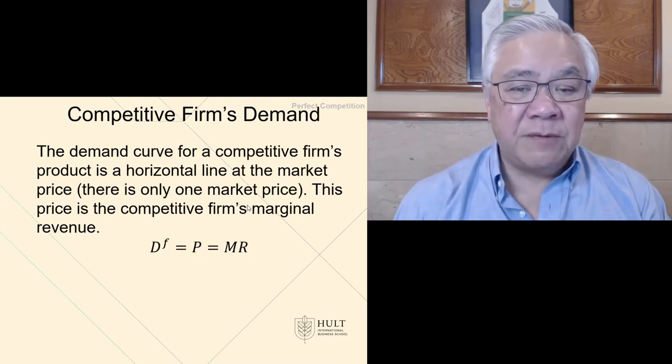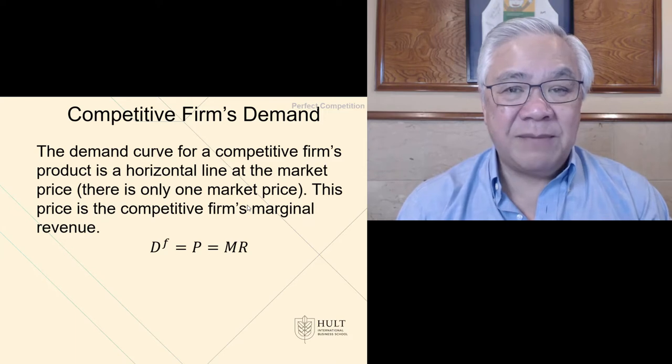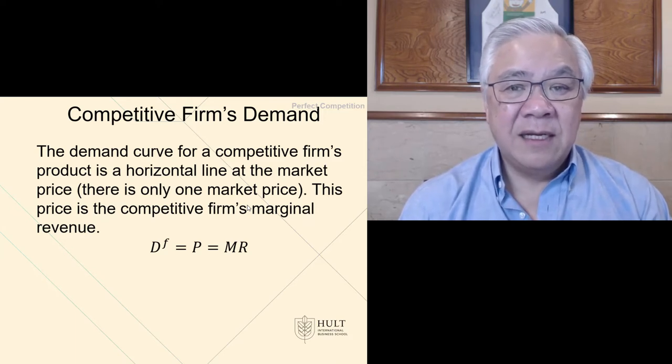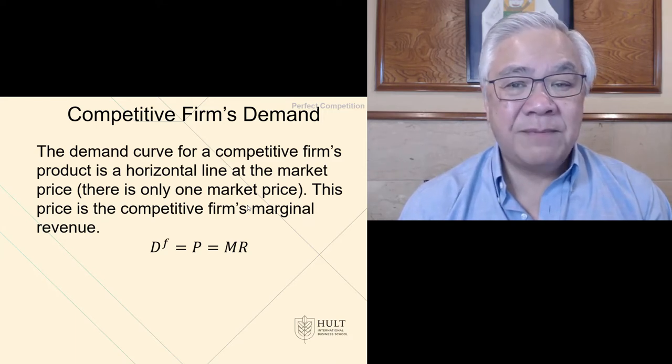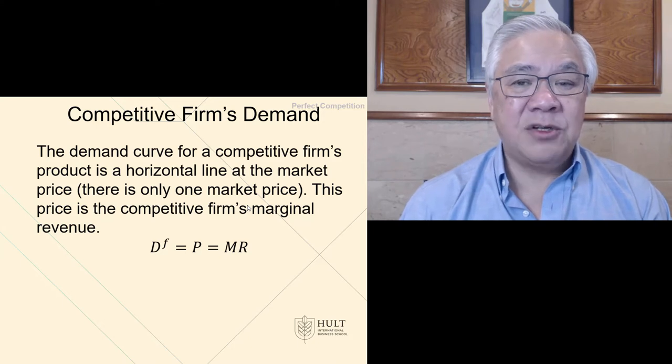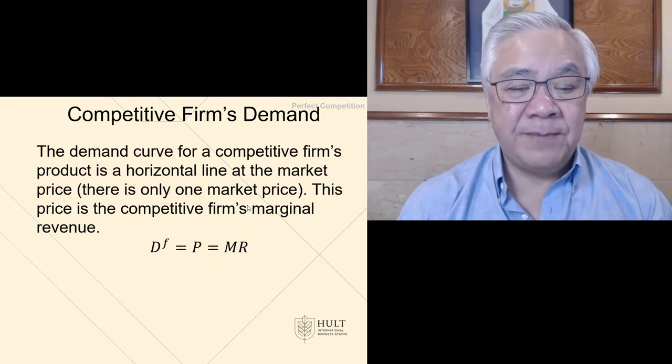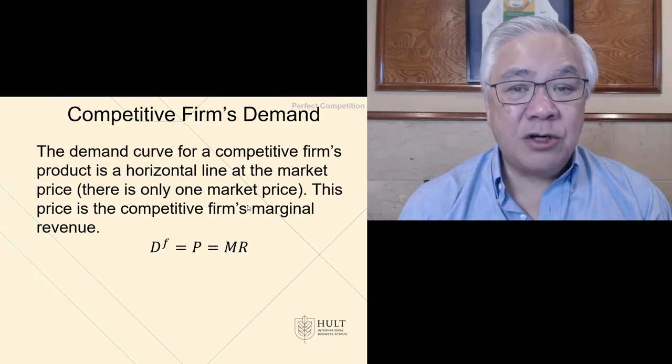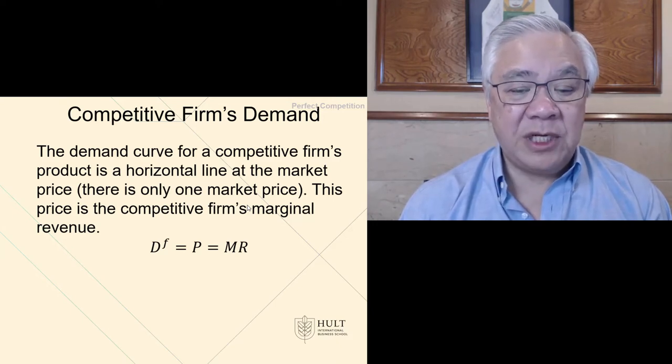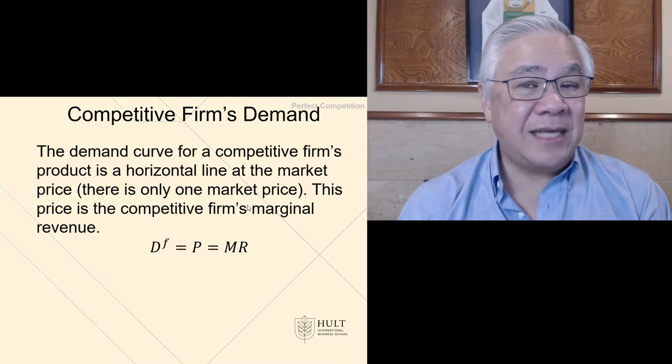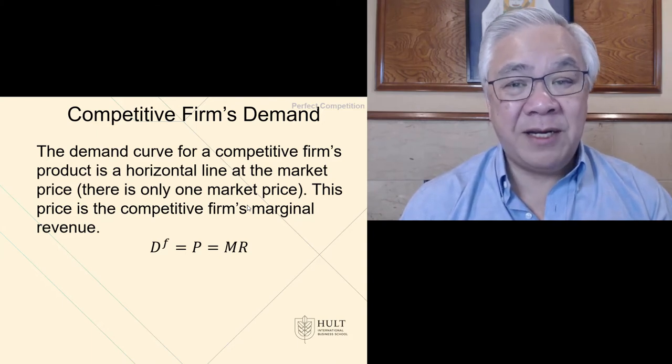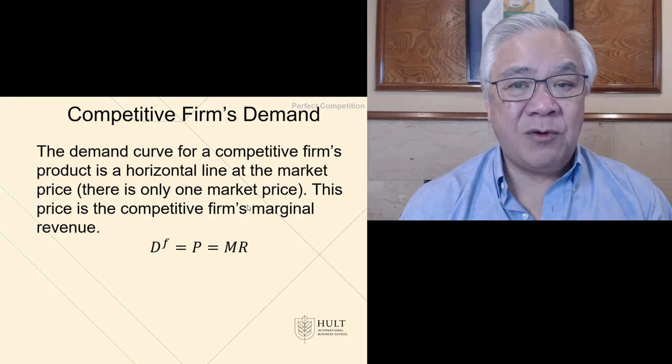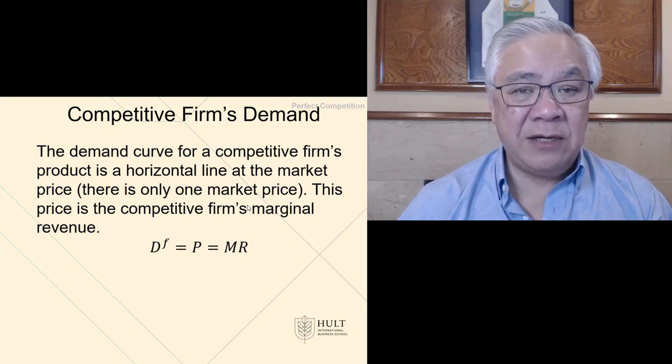As mentioned earlier, the firm's demand curve is quite unique because the price is already set. So the demand is almost limitless, but what you're constrained by is your cost structure relative to that price. So a firm will look at the demand curve that equals the price, which equals their marginal revenue. It's the same for all points in quantity because the price is the same at any quantity.